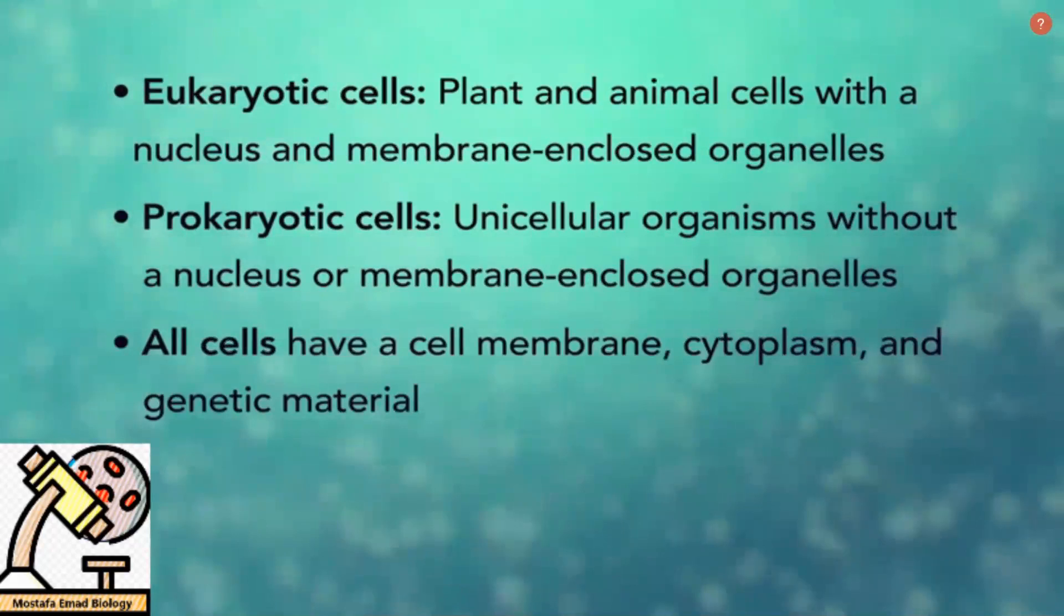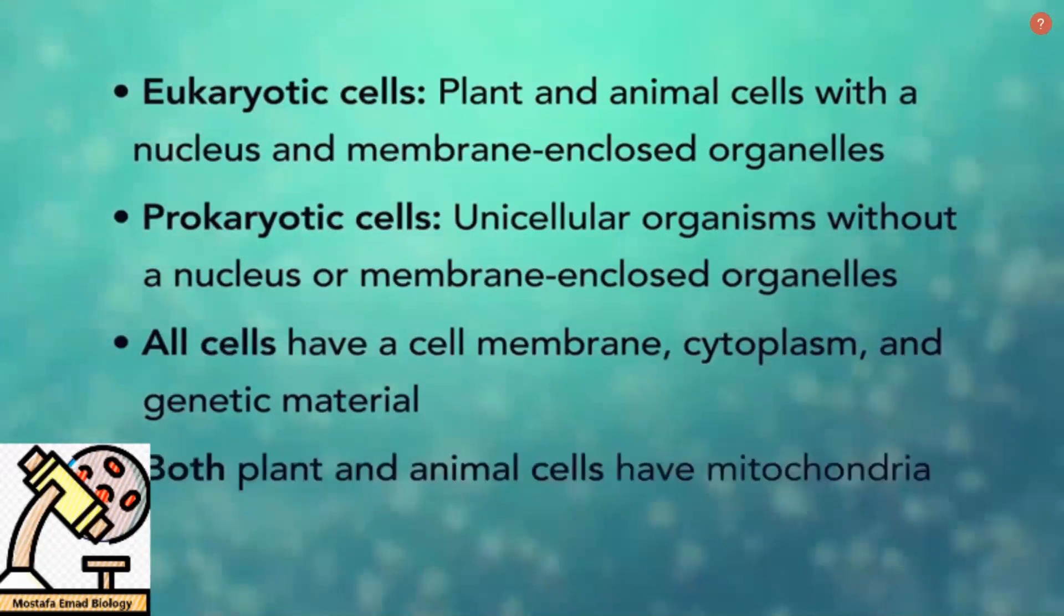All cells have a cell membrane, cytoplasm, and genetic material. And even though only plant cells have chloroplasts, plant and animal cells have mitochondria.